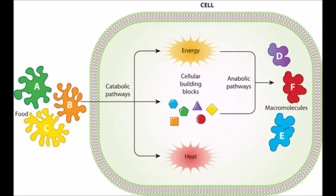What catabolic pathways have in common is that by breaking chemical bonds to make smaller molecules, they release energy — chemical energy — and that energy is in the form of ATP. Some energy is also released but is unusable; that is given off as heat.